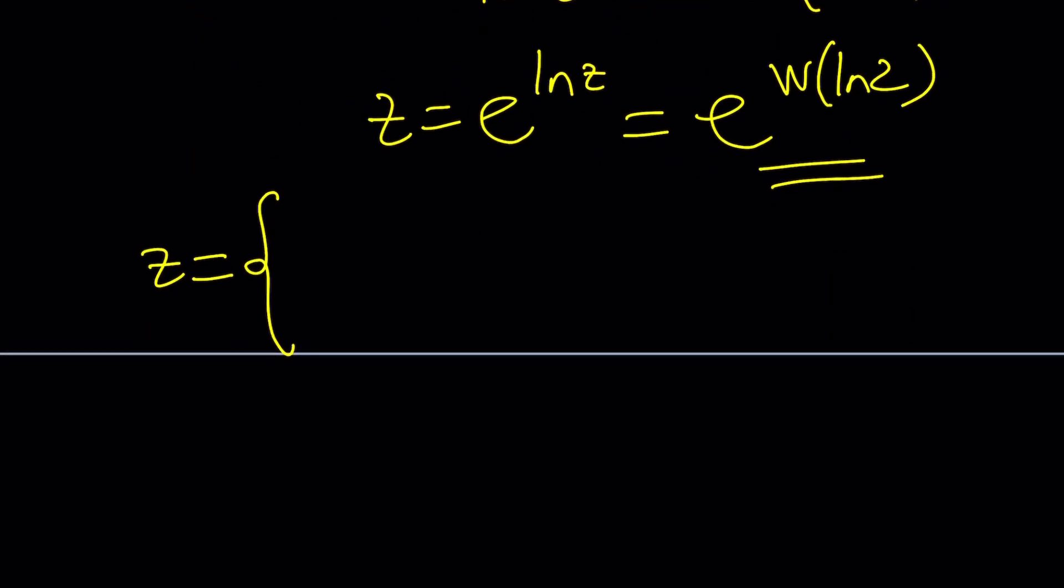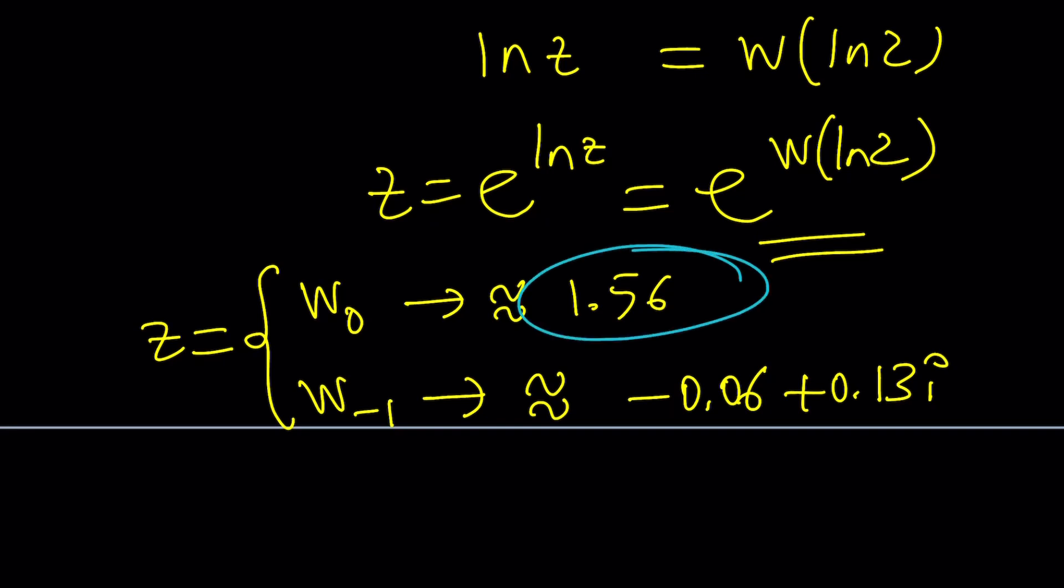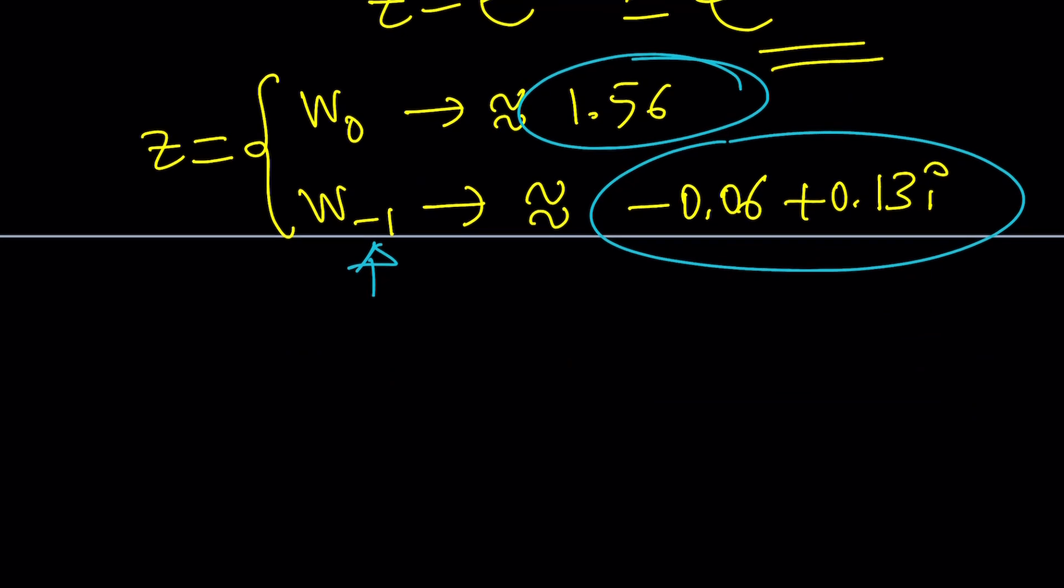You're pretty close if you said 1.5. Because if you use one of the branches of Lambert's w function, you're going to get approximately 1.56. If you use another branch, a negative branch, then you're going to get something that looks like negative 0.06 plus 0.13i. And that's just going to be another solution. And obviously, there are infinitely many solutions depending on which branch you use and the analytic continuation of the whatever so on and so forth.